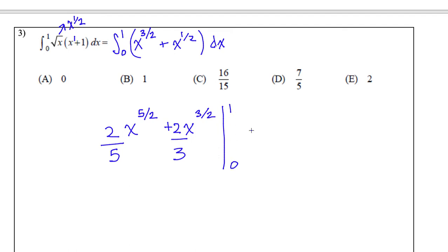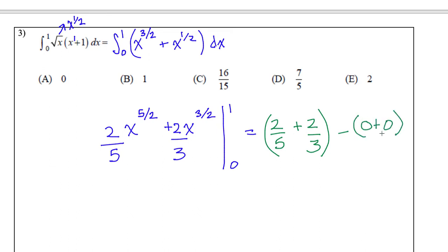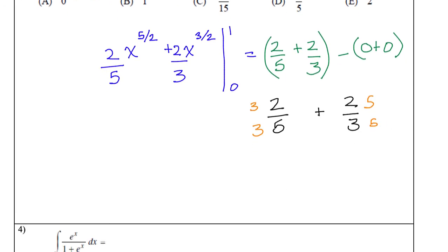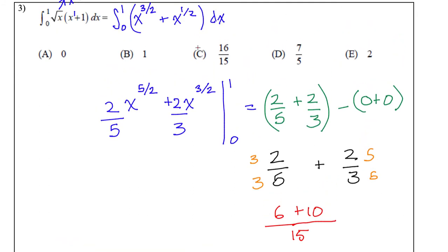When I plug in 1, 1 to the power of anything is always 1. So this is going to be 2/5 plus 2/3. Minus, and when I plug in 0, it's going to be 0 plus 0. So I just need to add 2/5 and 2/3. Multiplying the left by 3/3 and the right by 5/5, I get 6/15 plus 10/15, which is 16/15. The correct answer is C.